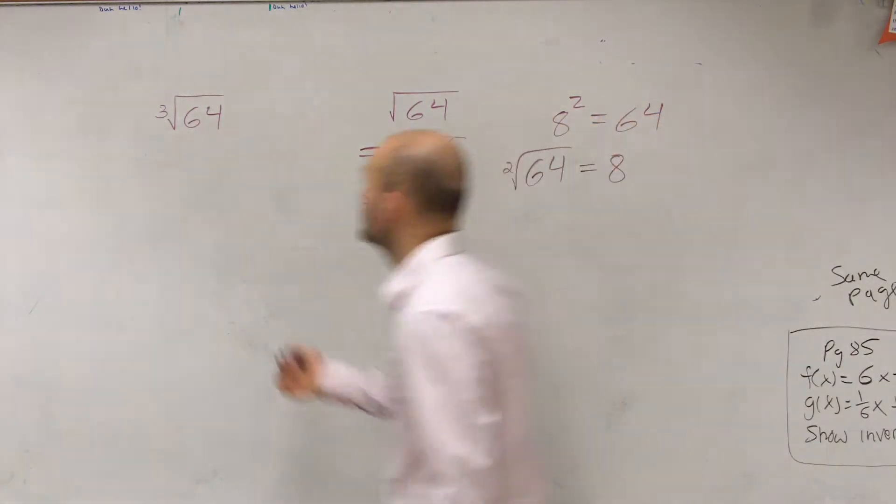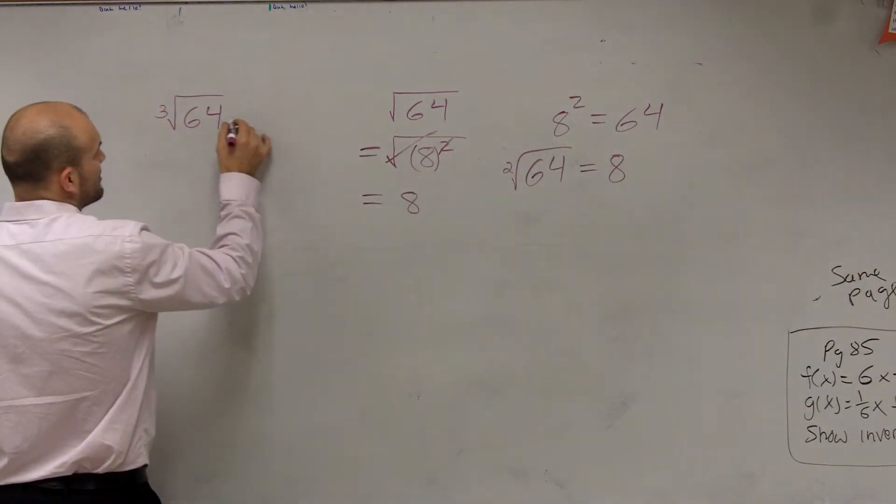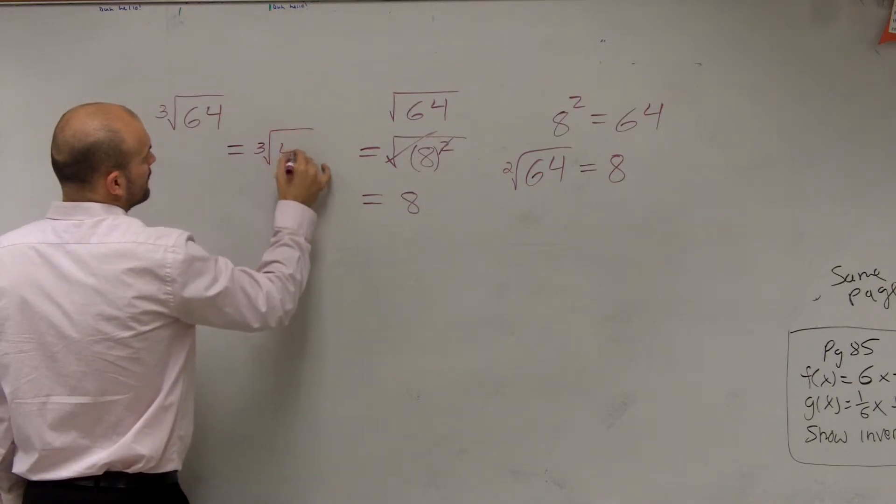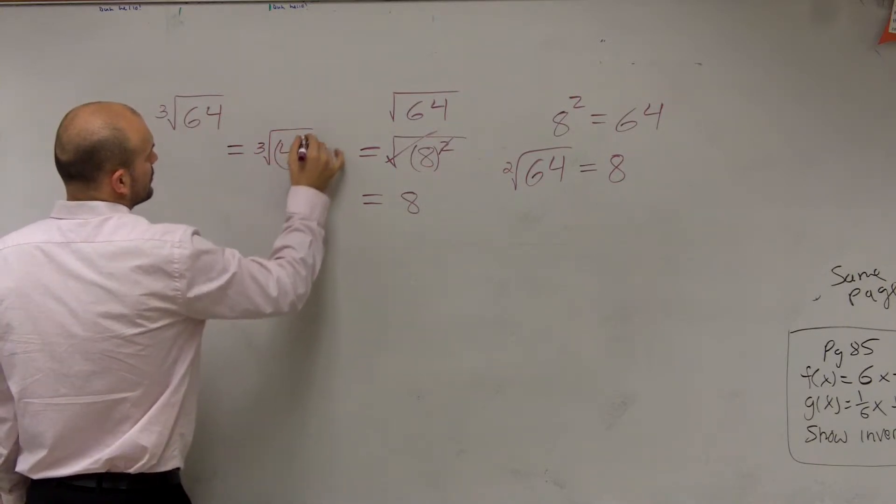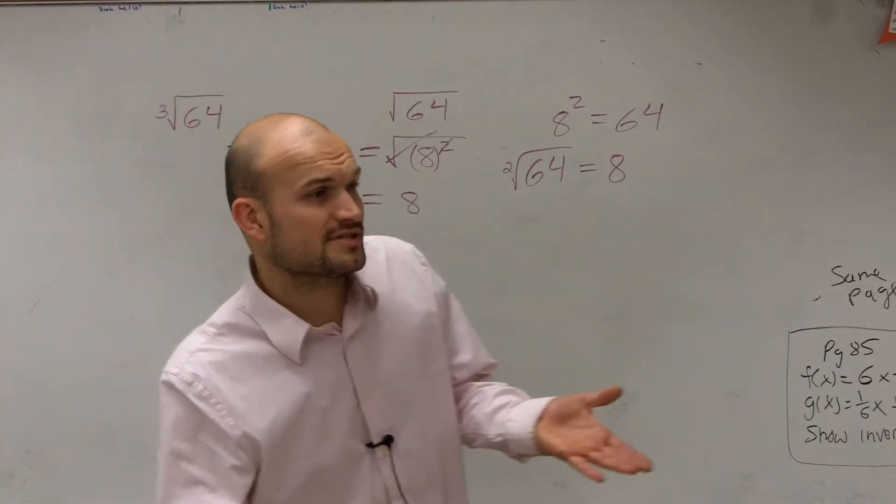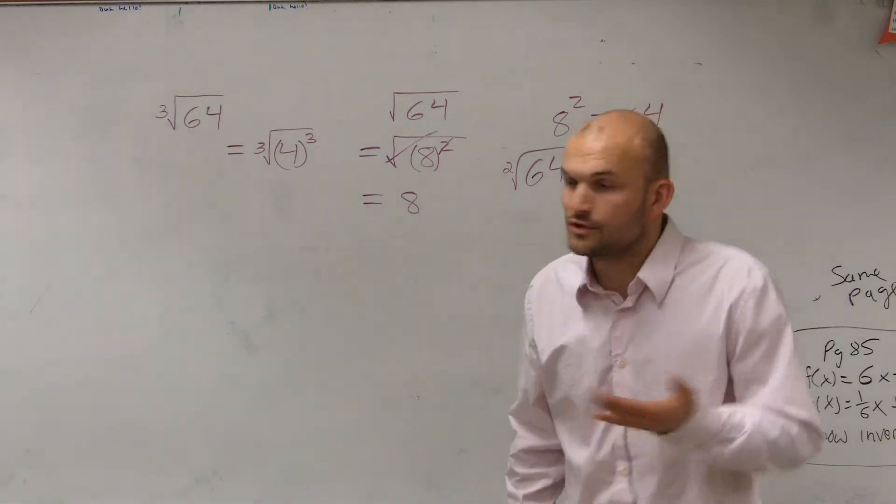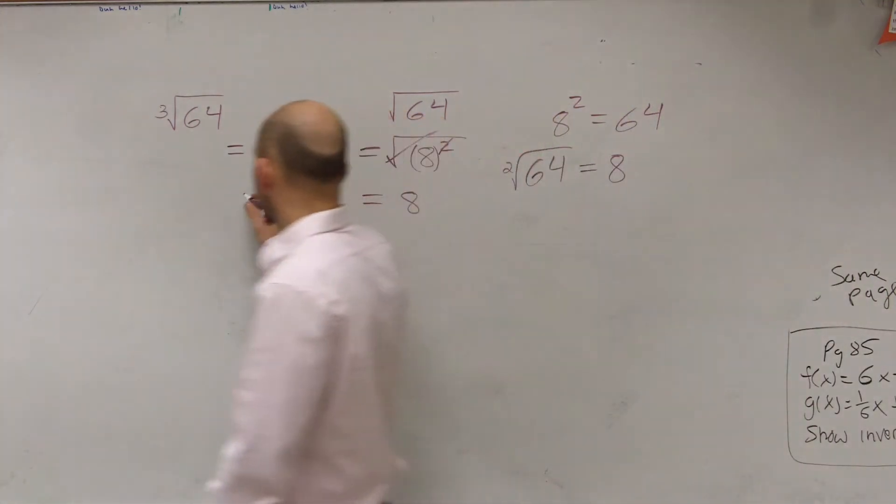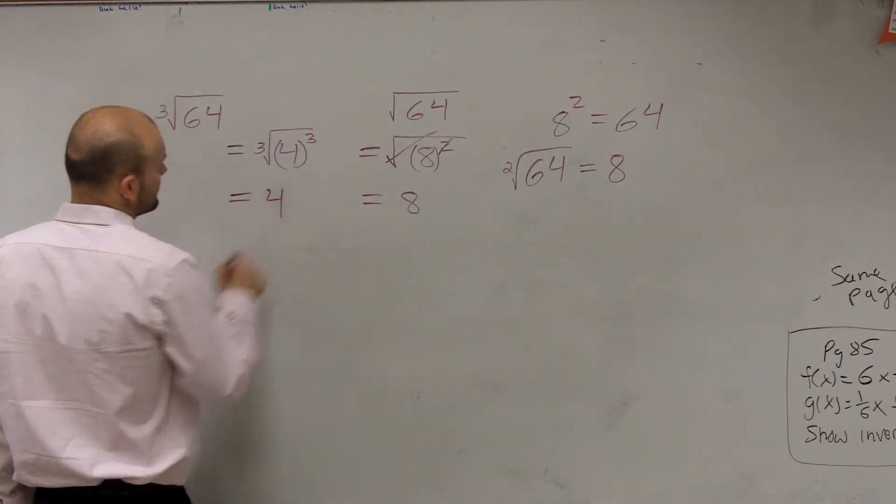We can actually say 4. So I'm going to rewrite this as the cube root of 4 cubed. And just like the square root of something squared canceled out, the cube root of something cubed are going to undo each other as well. Therefore, we could say this answer is 4.